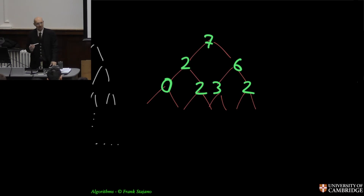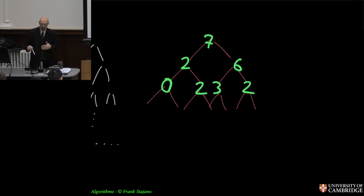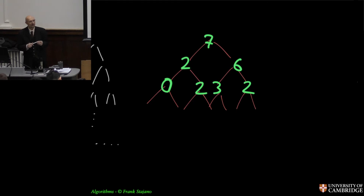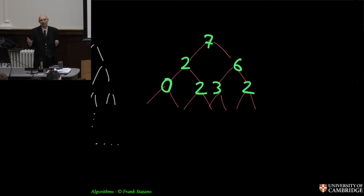How much does this whole operation cost? Each one of these fix-ups — fixing the root that's been demoted — costs no more than the height. And the height is bounded by the height of the whole tree, so it's bounded by log n. And there are only n of these things, so it's still bounded by n log n. That's the same bound as before — have I improved on anything? No, but it's just because my analysis has been too loose. It's not tight enough to give me the real bound.